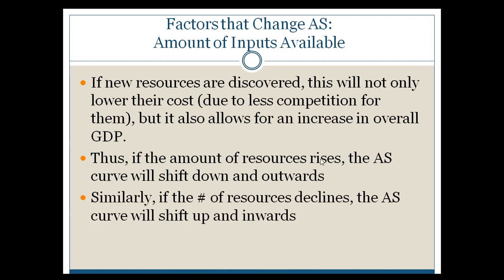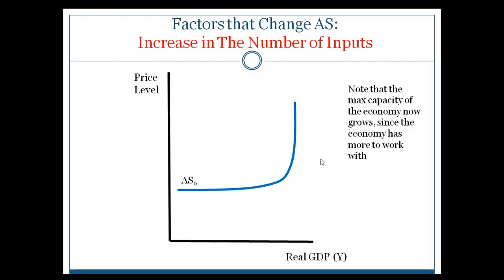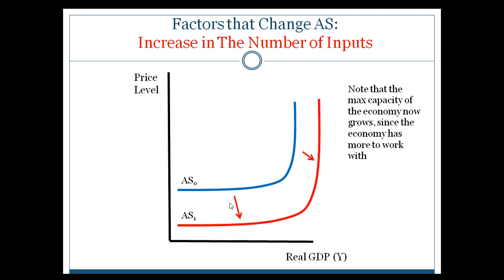In this particular picture you can see how that works. If you increase the amount of workers or materials in your economy, not only will prices tend to fall because things are more abundant, but you'll also tend to see that you have more capacity overall. So it looks like what you saw with the price changes, but rather than just moving the curve downward, you're also moving it outward because at all points you have more ability to produce and your limit has actually increased.